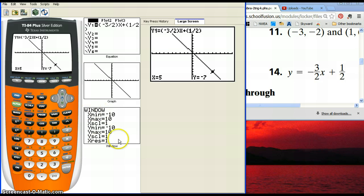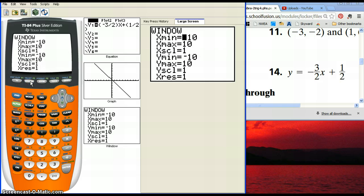If you look down here, there's our window button. If you hit window, this is just telling you how large is your graph. It's telling you that the lowest x value is negative 10. Then it's telling you the highest x value is positive 10. And then this number 1 is saying I'm counting by 1's each time.